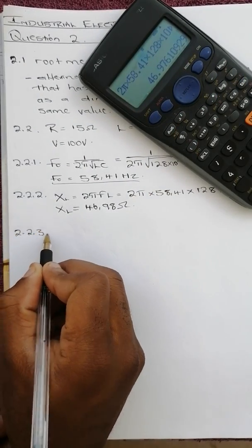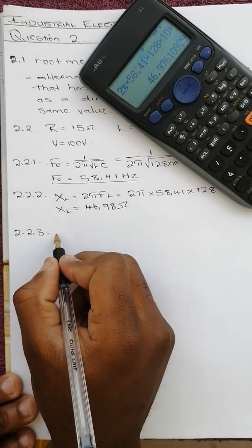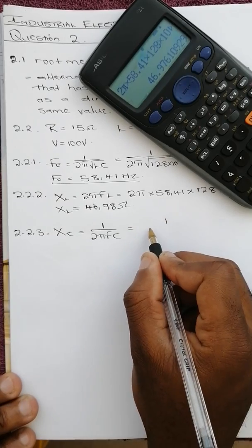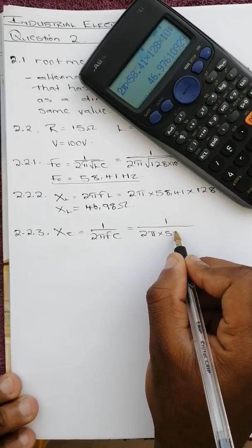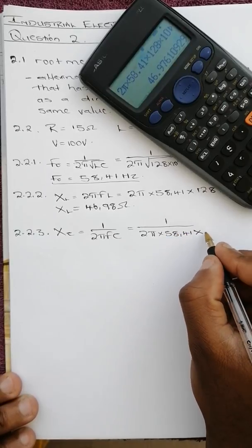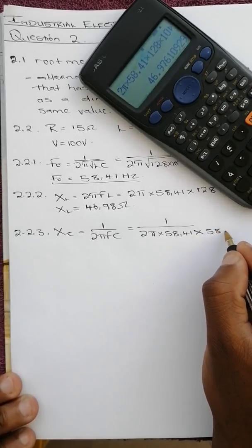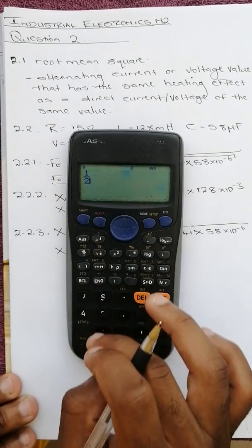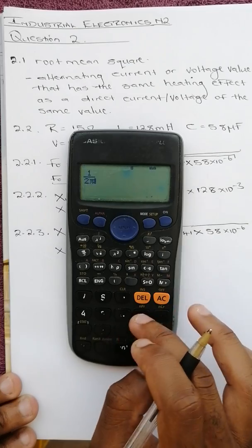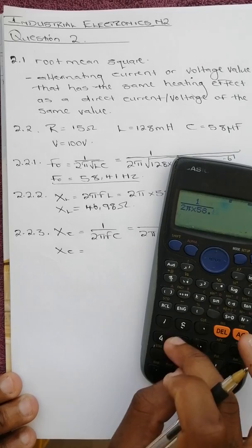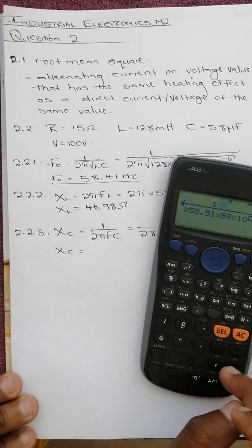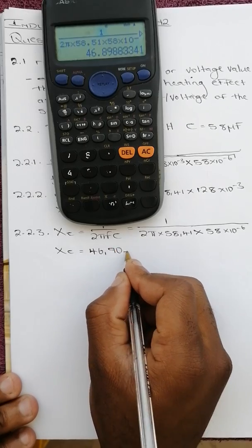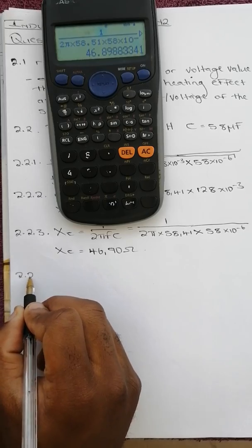Then 2.2.3 says the capacitive reactance XC equals 1 over 2 pi FC which is 1 over 2 pi times 58.41 times 58 times 10 to the power negative 6, and we get 46.90 ohms.